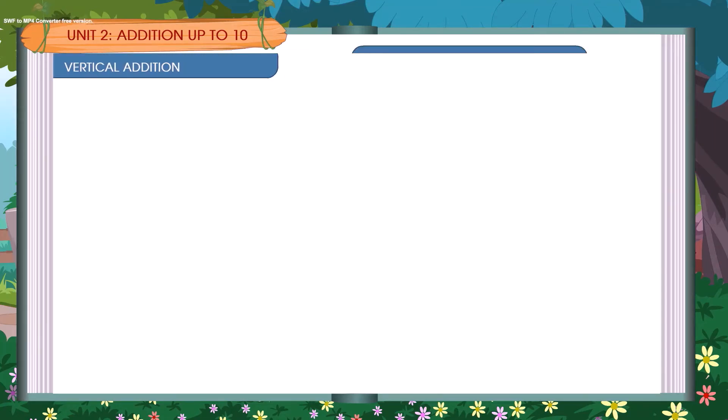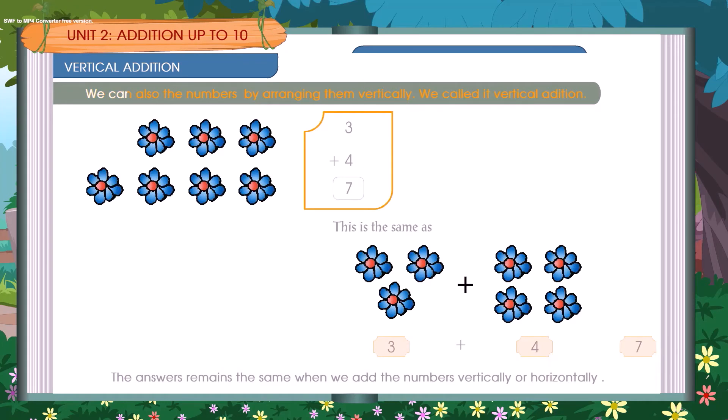Vertical Addition. We can also add the numbers by arranging them vertically. We call it Vertical Addition. 3 plus 4 is equal to 7. This is the same as 3 plus 4 is equal to 7. The answer remains the same when we add the numbers vertically or horizontally.